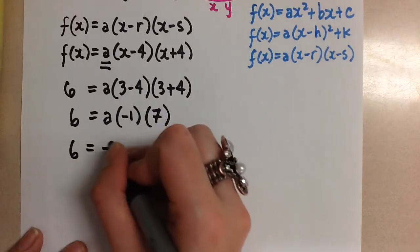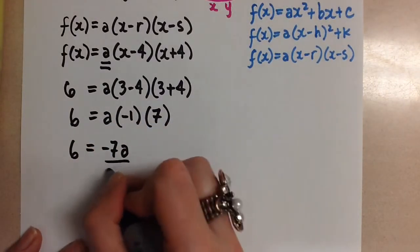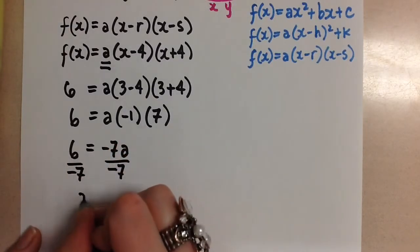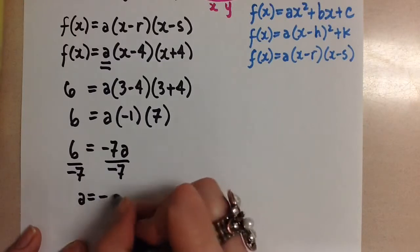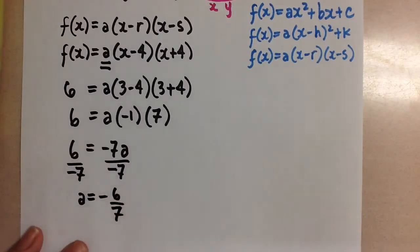So we have negative 7a left on the right-hand side. To get a by itself, we divide by the coefficient, and we get that the a value for this parabola is negative 6 over 7, which means that it's a parabola that is opened down.